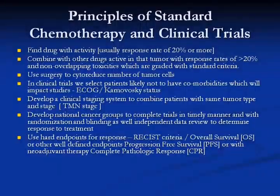Grade 5 toxicity means the patient died from it; grade 4 means incapacitated; grade 3 means the patient probably couldn't work; grade 2 means it was a problem but manageable; grade 1 means it was bothersome. Surgery is used to cytoreduce the number of tumor cells.